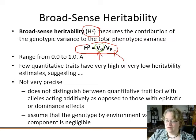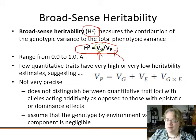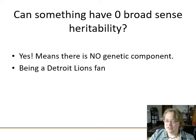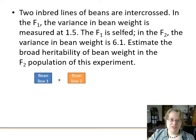Broad sense heritability also basically ignores genotype-by-environment variance, making it negligible — similar to how in physics you might ignore wind resistance for simplicity. Something can have zero broad sense heritability — like being a sports fan. Your parents might imprint that on you but it's not in your DNA. Similarly, what hair dye color you use is not heritable.